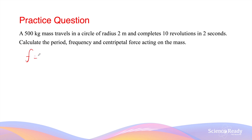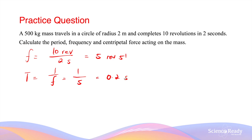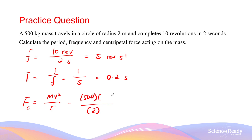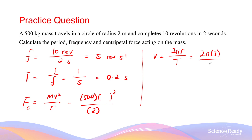We can calculate the frequency first: 10 revolutions in 2 seconds is equivalent to 5 revolutions per second. Therefore the period is 1 over 5, which is 0.2 seconds — the object takes 0.2 seconds to complete one revolution. The centripetal force formula is mv²/r. We have mass 500 kg and radius 2 m, but we need the velocity. Using v = 2πr divided by period: 2π times 5 divided by 0.2 gives approximately 157 m/s.